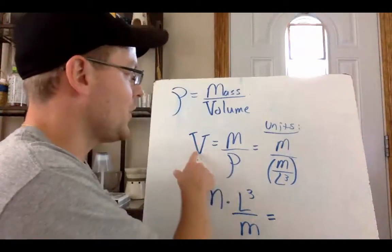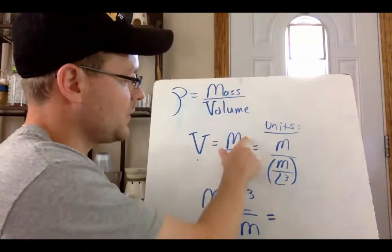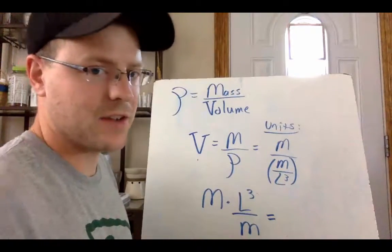So solving for volume, just swap your mass and density. And doing that gives me mass per density is how I solve for volume.